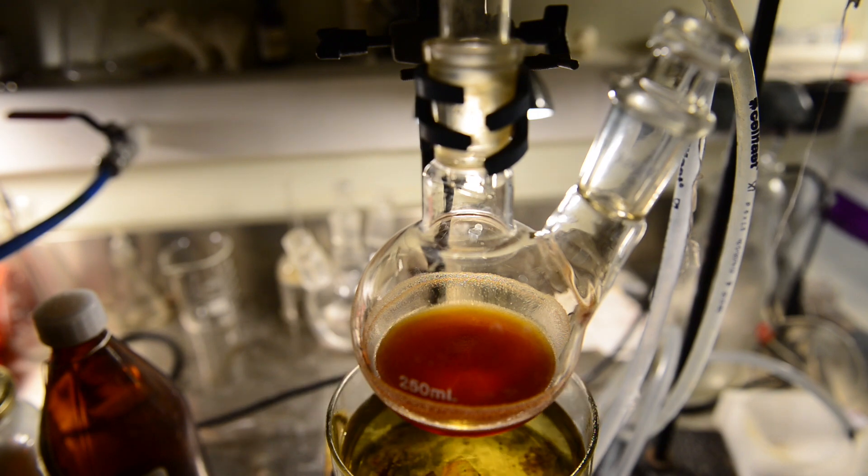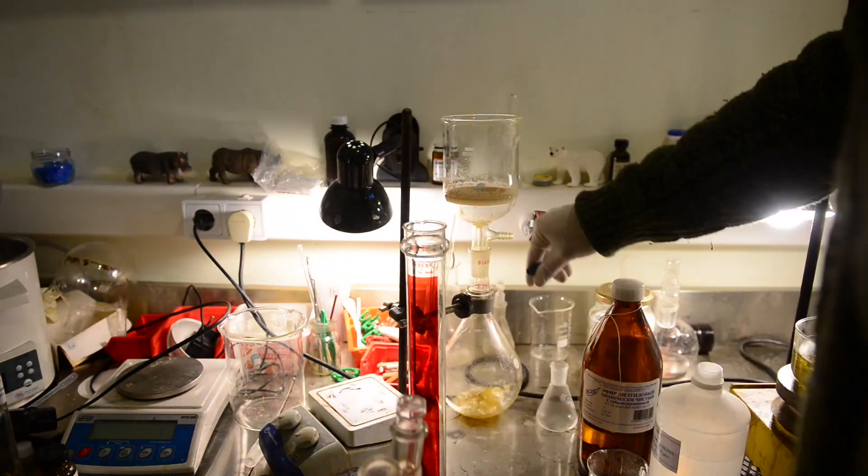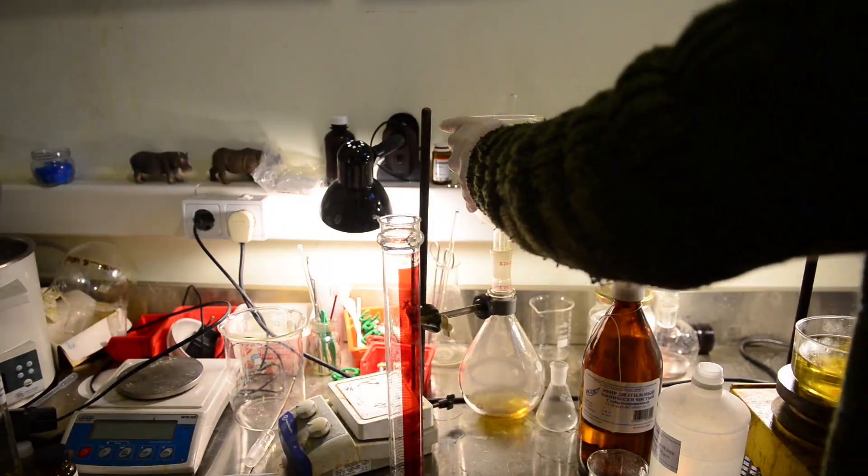After that, we are preparing to filter, to get rid of NBS solids that were formed during the cooling process. We wash the flask walls and the filtrate twice with 20 milliliters of chloroform.